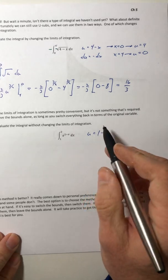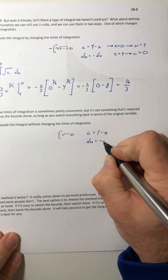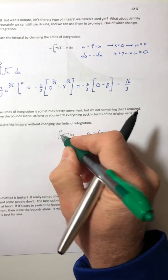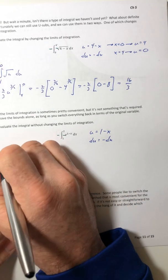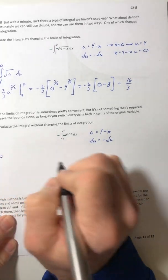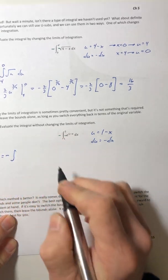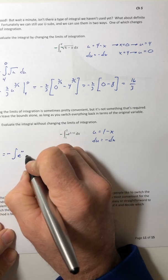So u would equal 1 minus x, du being negative dx. So I need a negative inside and outside again.